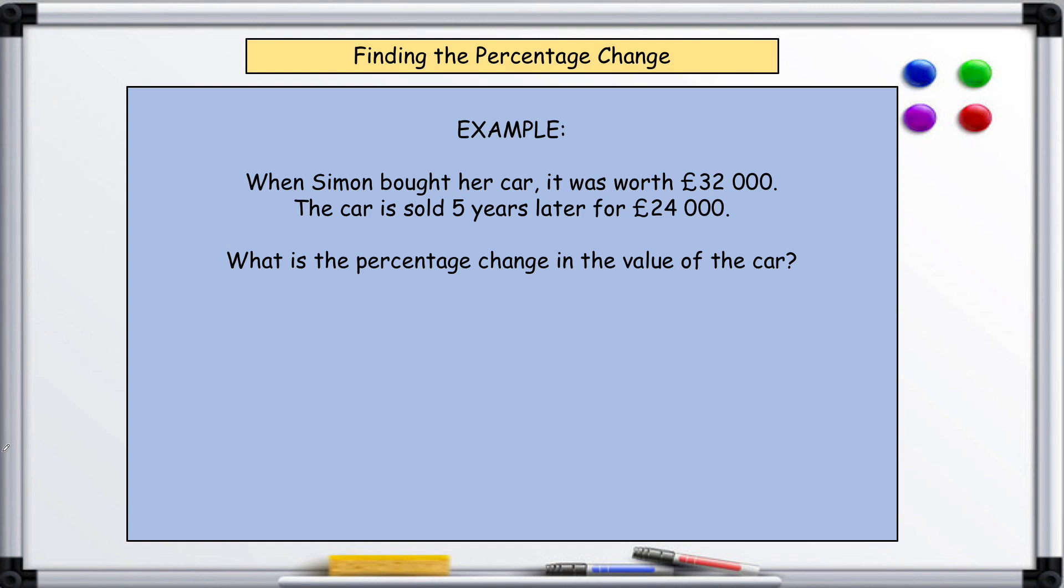So 24,000 divided by 32,000, and it will give you a decimal. If you don't get a decimal, you've done it the wrong way around. It's given a decimal of 0.75.